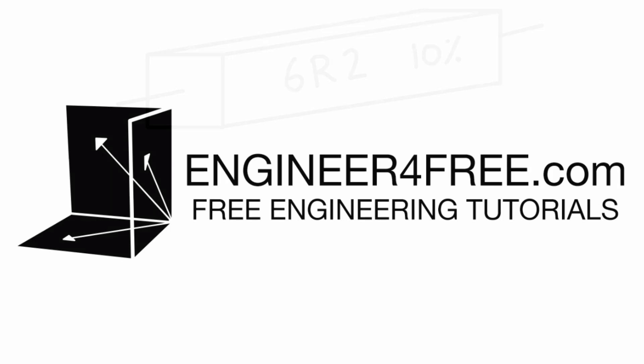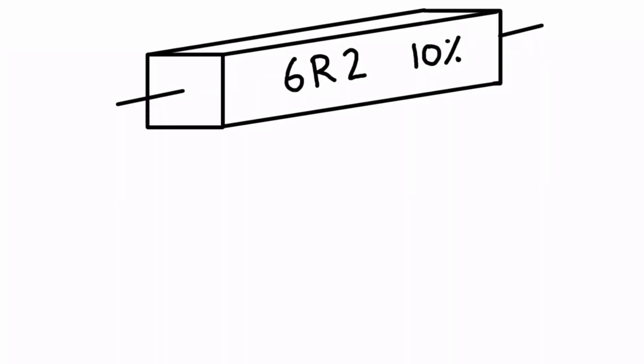Alright guys, so sometimes you're gonna get resistors that don't have color codes, but instead they have a letter and number code. For example, one like this, you'll see a bunch of numbers printed on it. It'll say like 6R2, 10% and then a bunch of other stuff.